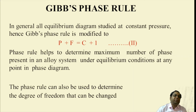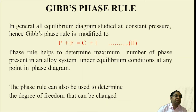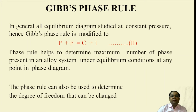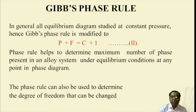So the Gibbs phase rule is modified to P plus F equals C plus 1. Instead of taking two independent variables like pressure and temperature, we are only considering temperature as the variable, so it is a single variable criteria. This phase rule helps to determine the maximum number of phases present in an alloy system under equilibrium conditions at any point in the phase diagram.